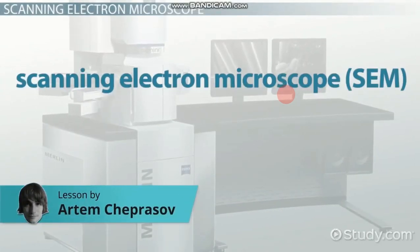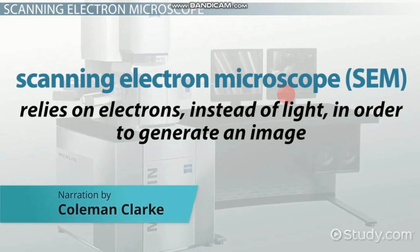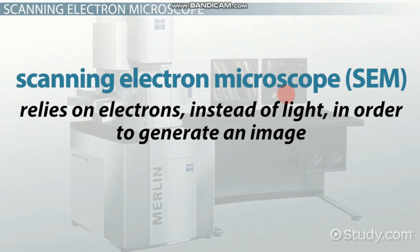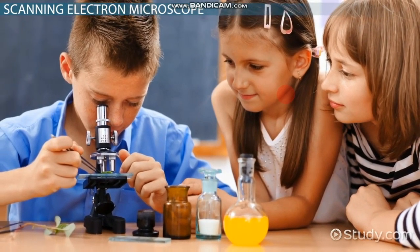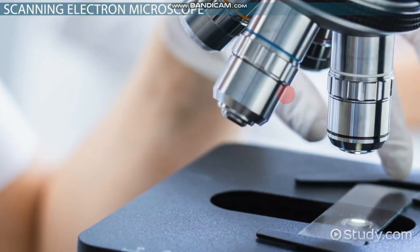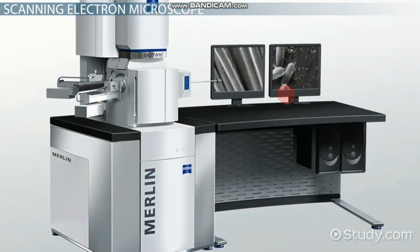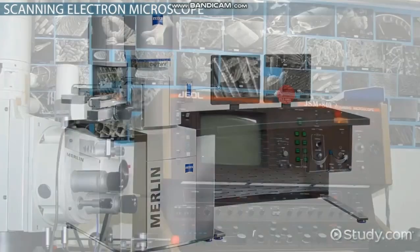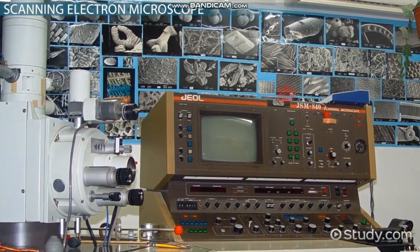A scanning electron microscope, or SEM, is a type of microscope that relies on tiny particles called electrons instead of light in order to generate an image. You've probably worked with light microscopes before — they're relatively small and have magnification lenses you can use to look at a sample on a slide. But it's less likely you've worked with a scanning electron microscope before. That's why this lesson will help you learn more about how one works and what it's used for.